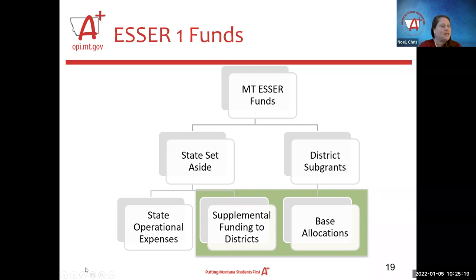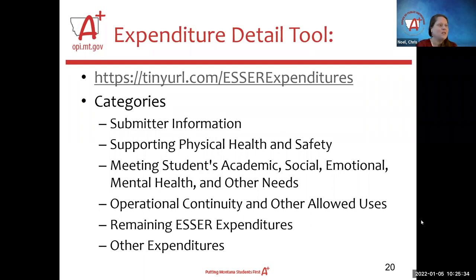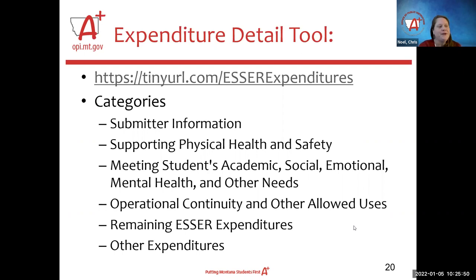We're going to walk through the expenditure survey. If you want to access it directly, you can type tinyurl.com/ESSERexpenditures and it should get you straight to that worksheet. The sections in the expenditure survey include submitter information — which is the same in all surveys — and then the federal government is asking us to break your expenditures down into specific categories and asking how much you spent separately on these types of activities.